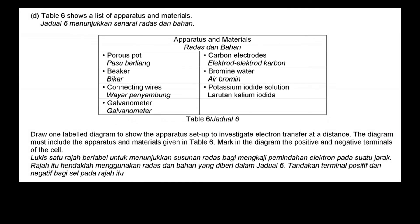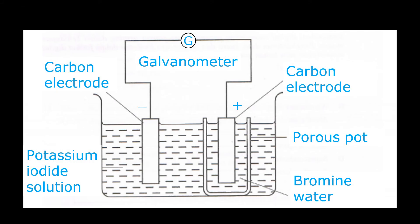Table 6 shows a list of apparatus and materials. You are given a beaker, connecting wires, a galvanometer, carbon electrodes, bromine water, and potassium iodide solution. Draw a labeled diagram to show the apparatus setup to investigate electron transfer at a distance, using all the given apparatus and materials, and mark the positive and negative terminals of the cell.